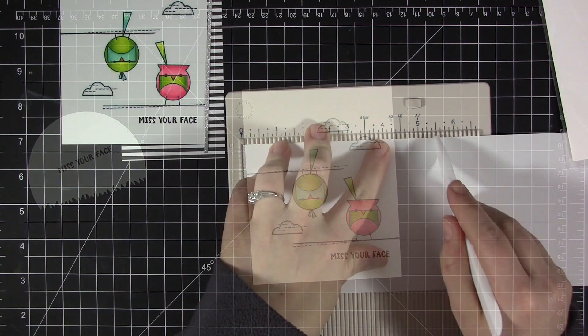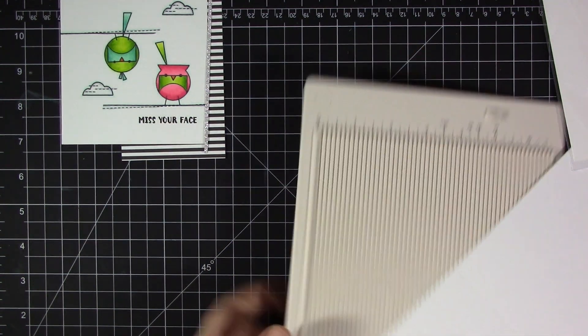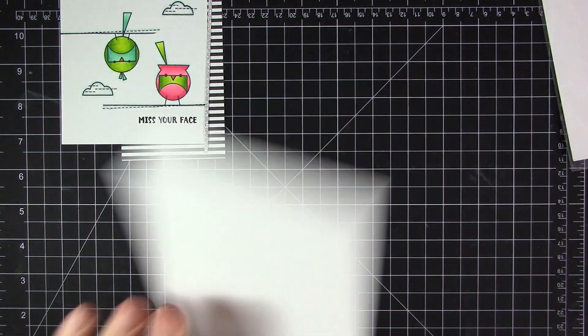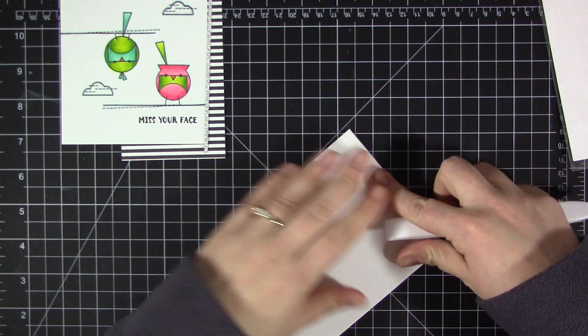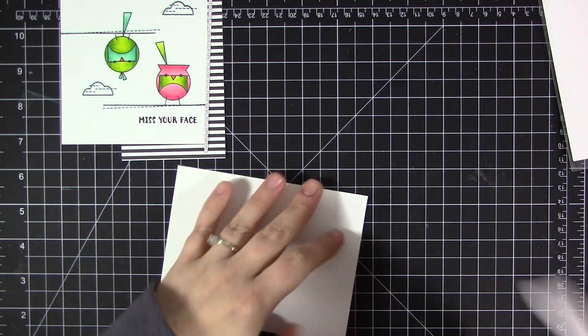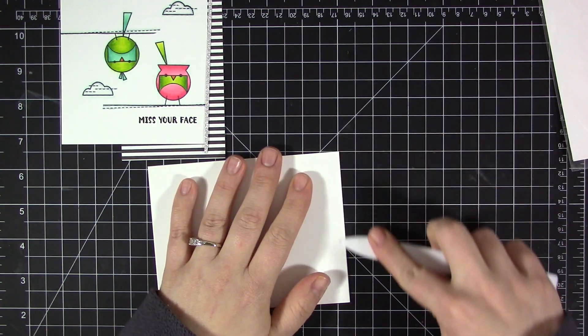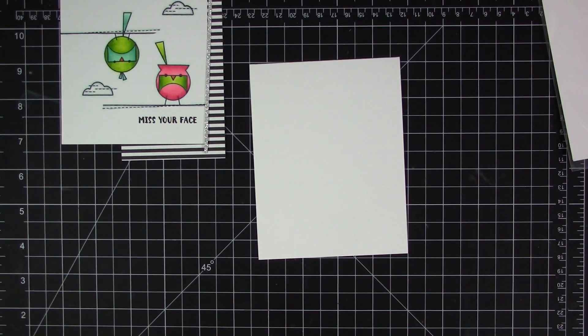For my sentiment, I decided to use the 'miss your face' sentiment from the stamp set. That's another new favorite of mine from W plus nine. It has so many great sentiments that you can mix them together, and they're just the kinds of sentiments that I would say, so I really love that set.